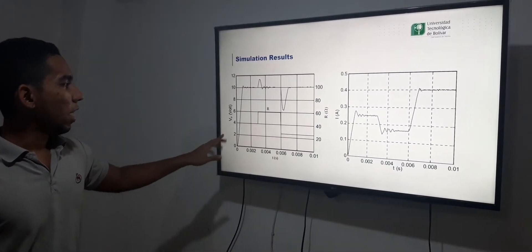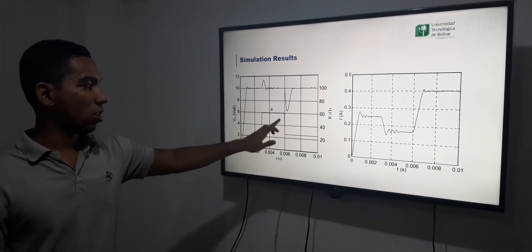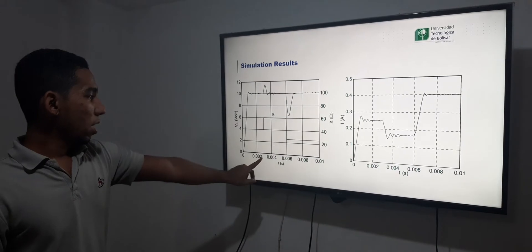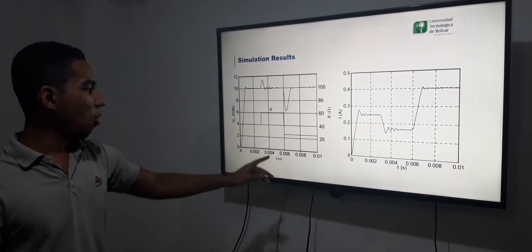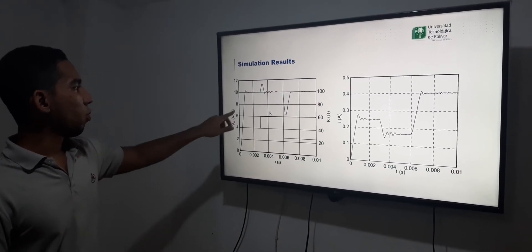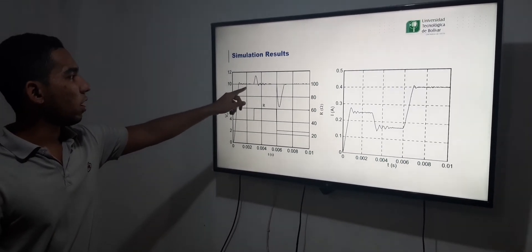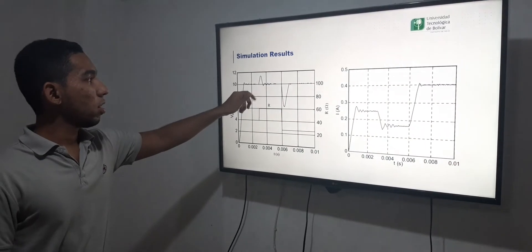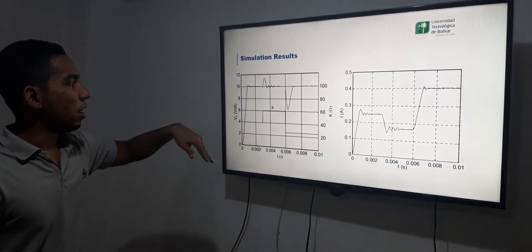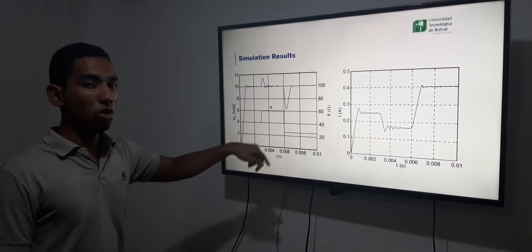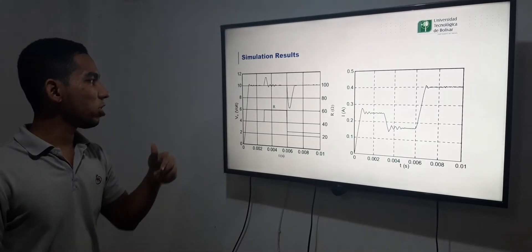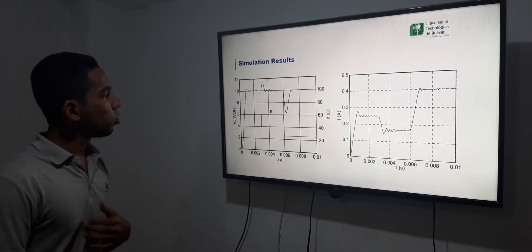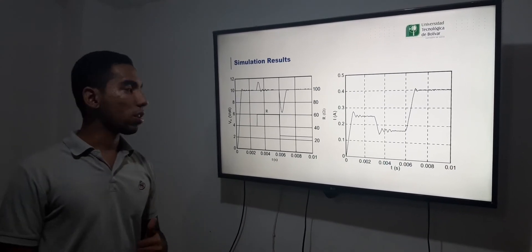Here we can see a change on the load at 4 milliseconds and we can see that the controller of the voltage is very good when the load changes. The voltage makes a little peak but it gets well controlled.